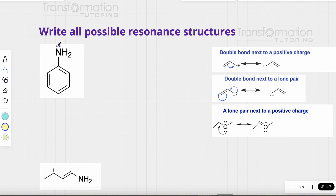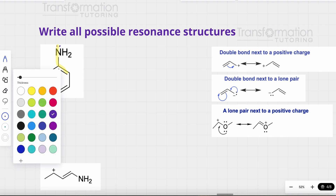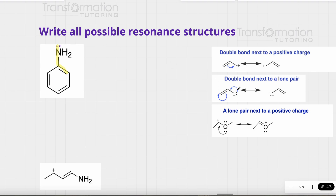Let's go ahead and highlight it. In this pattern, we will use two arrows to show the movement of electrons. First, electrons from the lone pair will move to create a double bond on this neighboring bond. Then there will be another arrow showing electrons from this double bond moving to create a lone pair on this adjacent carbon. So when we see a double bond next to a lone pair, we draw two curved arrows: one from the lone pair to the single bond to create a double bond, and another from the double bond to the carbon.